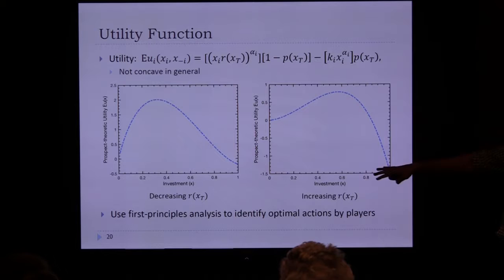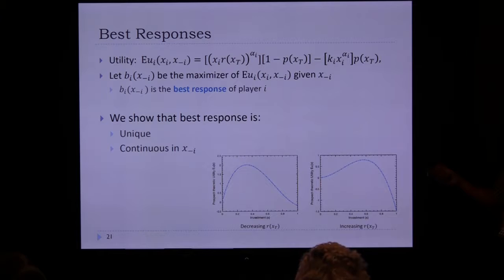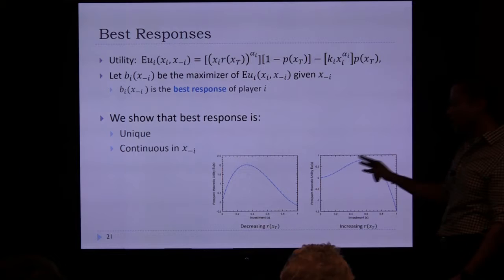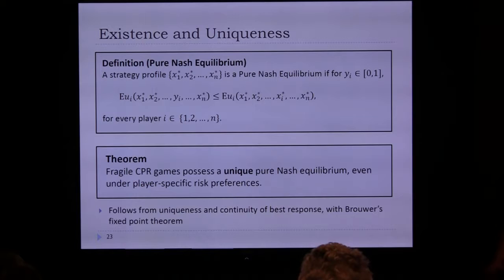Standard tools for convex or supermodular games can't be applied directly. Instead, we do a first-principles analysis showing that regardless of whether the rate of return is increasing or decreasing, the utility function always has a unique maximizer that is continuous in other players' investments. By Brouwer's fixed point theorem, a Nash equilibrium always exists — and it is also unique — even when players have heterogeneous alpha_i and K_i.